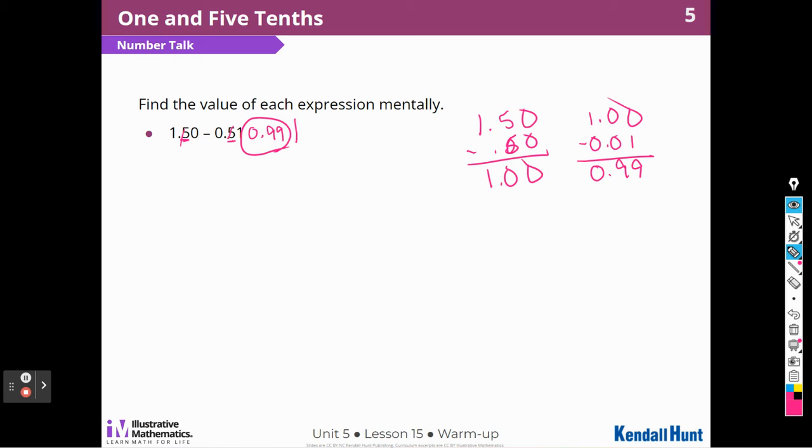Now, if I were doing that on pencil and paper, I would line up those decimal places, and I would say I cannot take 1 away from 0, so I'm going to have to borrow 1 from this, and that makes this a 9, and that makes this a 9, and then I cannot take 5 away from 4, so I'm going to borrow 1 from that, and that makes that a 14. 14 minus 5 is 9, and I get 99 hundredths.